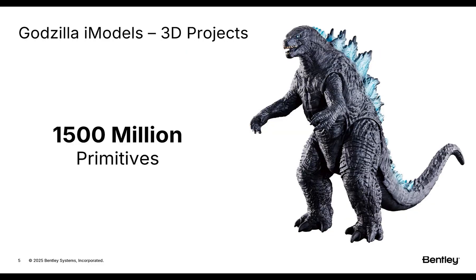One of the most interesting and challenging things is how big digital twin projects are. I call them Godzilla iModels — they're so big that they basically come and destroy all your infrastructure and crash the browser. Just to give you an idea, we found one example with 1,500 million primitives. Primitives can be a triangle, a point, or a line. So imagine trying to visualize that in the browser — basically it's impossible. The challenge is how can we visualize those models in WebGL.